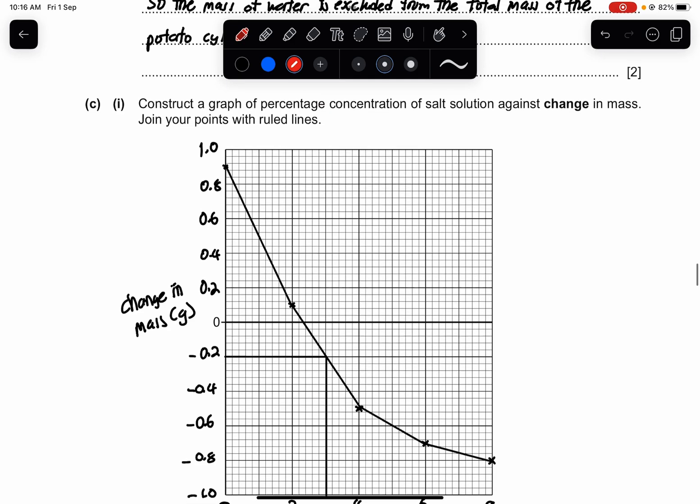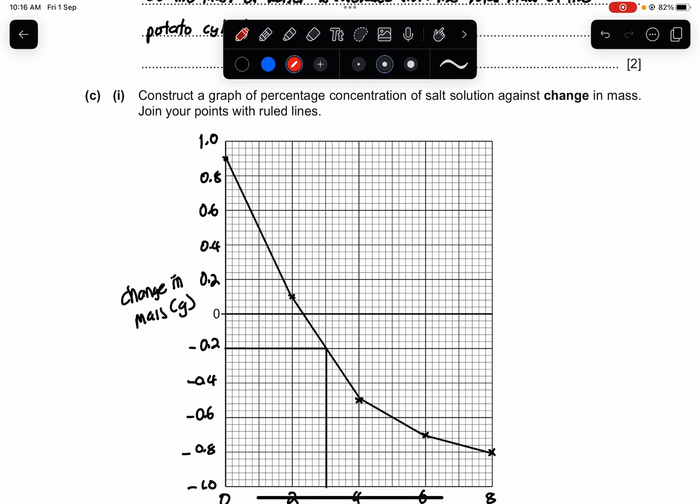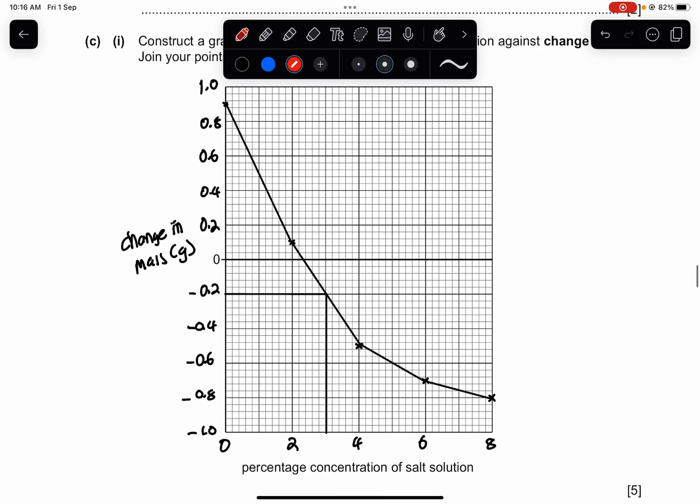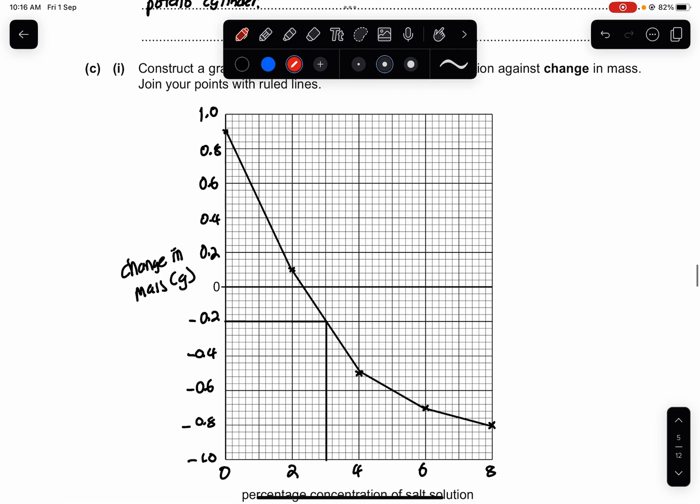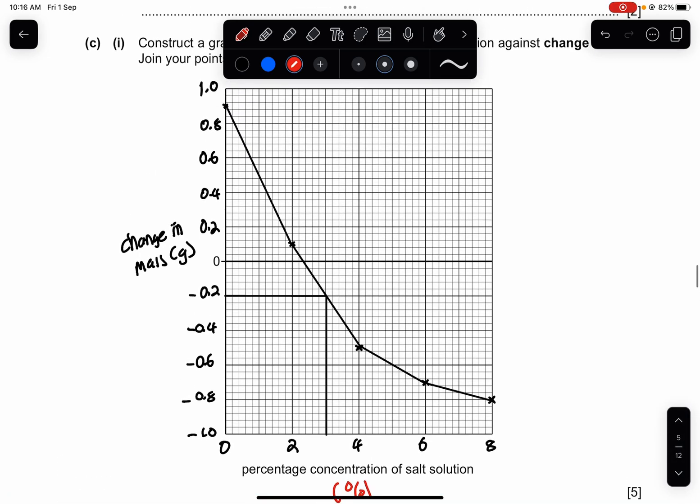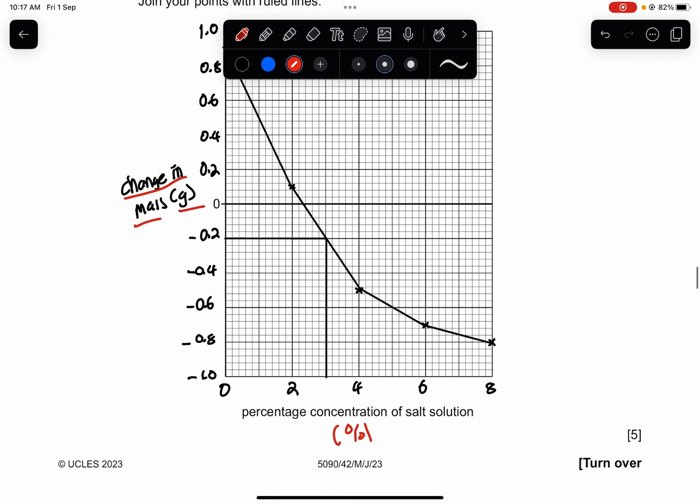Part C1. Construct a graph of percentage concentration of salt solution against the change in mass. So you can see that this is the graph that I drawn. But of course I forgot to put the percentage sign, which of course if you want to put, it's better because it's a safer option. Make sure you have a change in mass in grams. And then you just plot your graph and make sure it's like this.